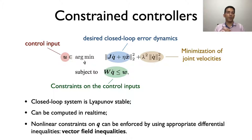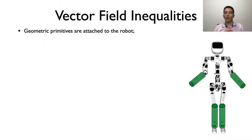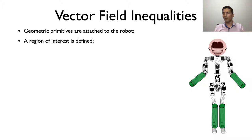Non-linear constraints on the robot configuration can be enforced by using appropriate differential inequalities. Even though the constraints must be linear on the control inputs, non-linear constraints can be defined. This is particularly interesting because it is simple to define geometrical primitives within dual quaternion algebra and easy to perform algebraic manipulations to find the corresponding gradients and Jacobians. The main idea is: first, geometric primitives are attached to the robot; then, a region of interest is defined — this can be a region that the robot must avoid, as in obstacle avoidance, or a region in which the robot must be confined, which is useful for task relaxations.